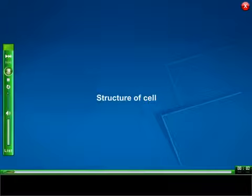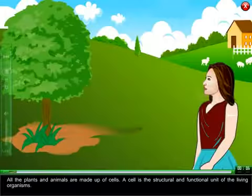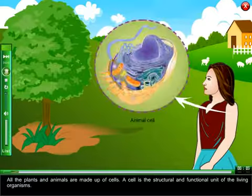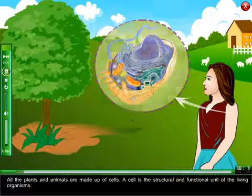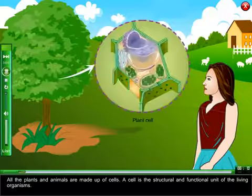Structure of Cell. All the plants and animals are made up of cells. A cell is the structural and functional unit of the living organisms.